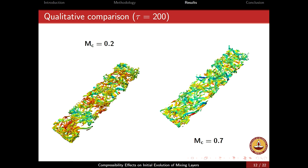Qualitatively, at a non-dimensional time of 200, we can observe the spanwise or two-dimensional roller structures still prominent in the incompressible case — remnants of the linear instability region. In the compressible case, such a pattern may be present but is not as clear.